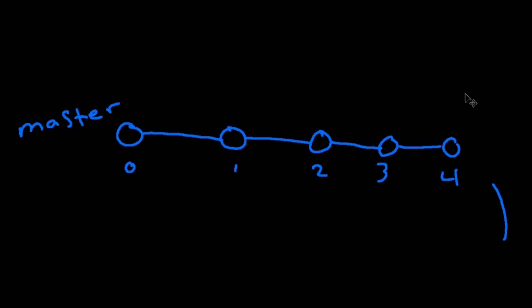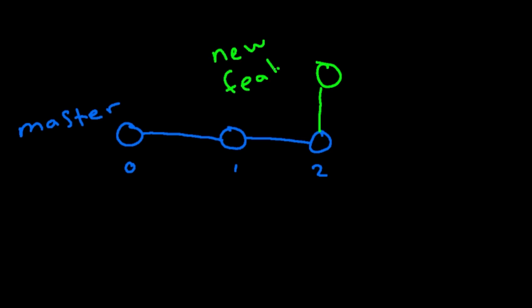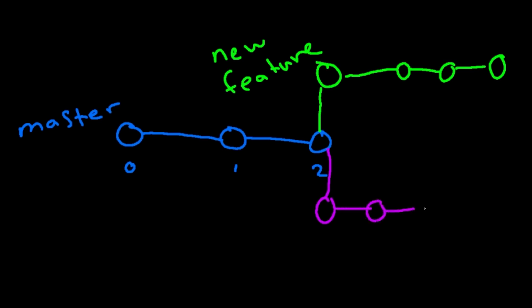The better approach is to create another branch off of master — let's call it 'new-feature.' At this point you've essentially made a copy of your master branch, and you can add as many commits as you want to it. Your teammate can create their own separate branch and add commits there without worrying about your feature. Once you're done, you merge your changes back into master, which creates another commit on master that now contains all the commits you made in your branch.